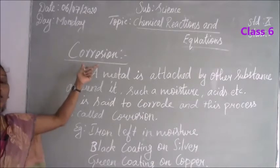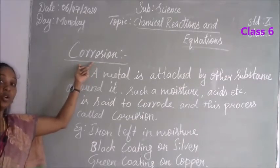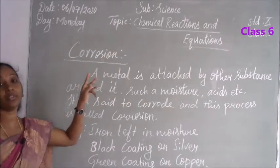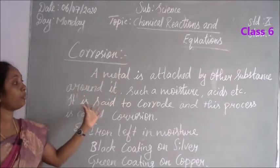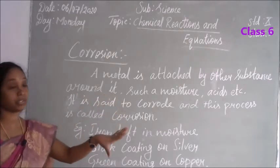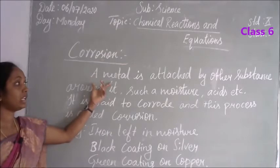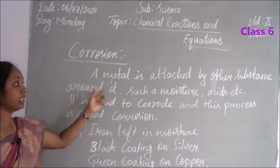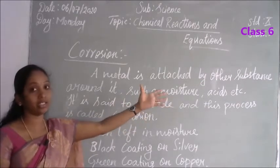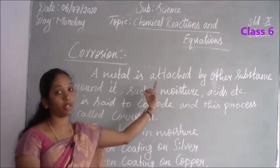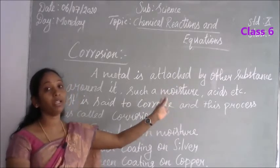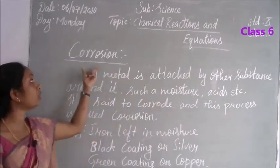Next topic is corrosion. In the previous lesson, we discussed about metals and non-metals. Corrosion means any metal, along with other substances such as non-metals, acids, or salts, will have a new substance appear upon them — the metal becomes some other new substance. That is called corrosion.